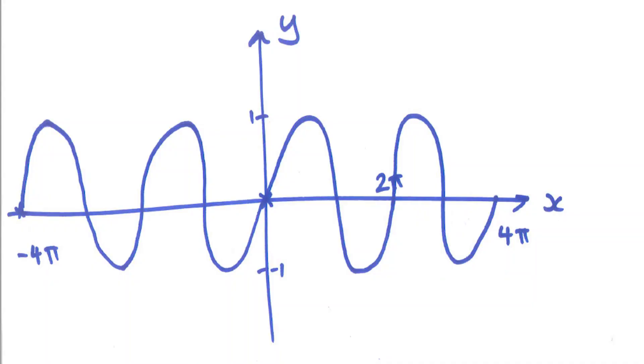So sine x goes through the middle, so that'll be one phase of 2 pi, and then again.